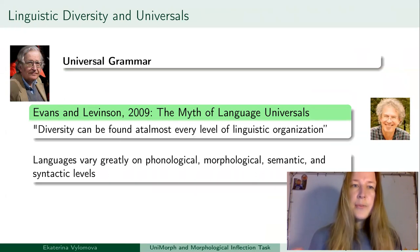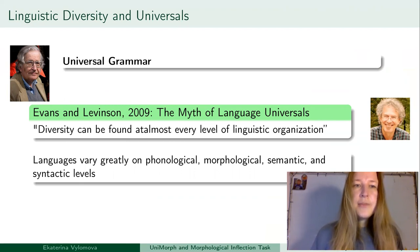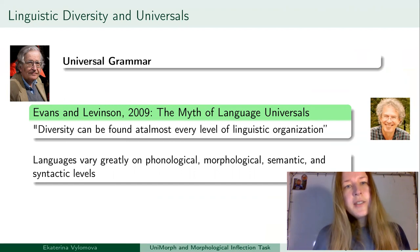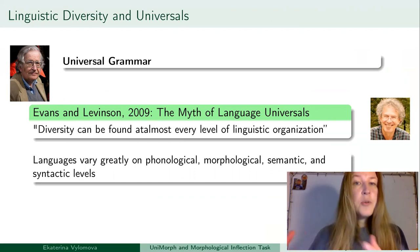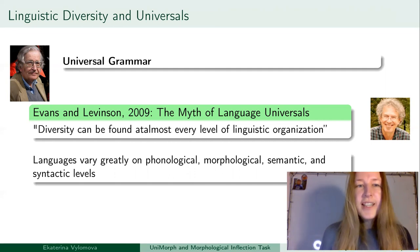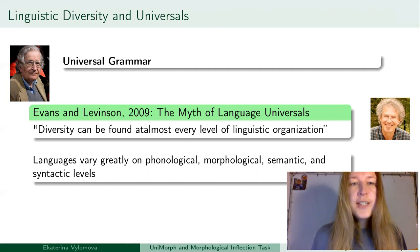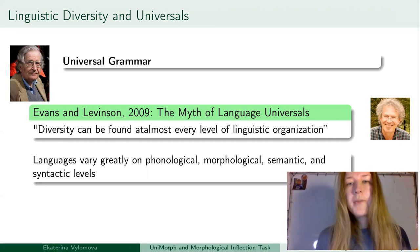To summarize, one idea is that languages have a lot in common — specifically, this idea is expressed as part of the universal grammar approach. The other idea is that languages are extremely different. They are so different that, for instance, the instrumental case in Russian is not the same as the instrumental case in Polish, even though Russian and Polish are related languages. This idea was expressed in the famous paper by Evans and Levinson called 'The Myth of Language Universals.'